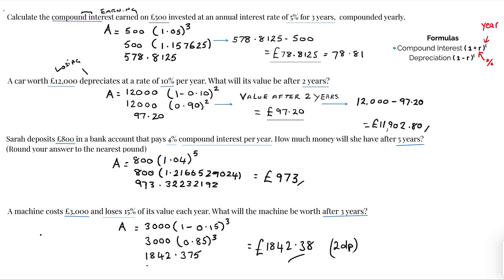This is a classic question: a machine costs three thousand pounds and loses 15 percent of its value each year. What will the machine be worth after three years? Loses just means depreciation and it's going to be a negative.